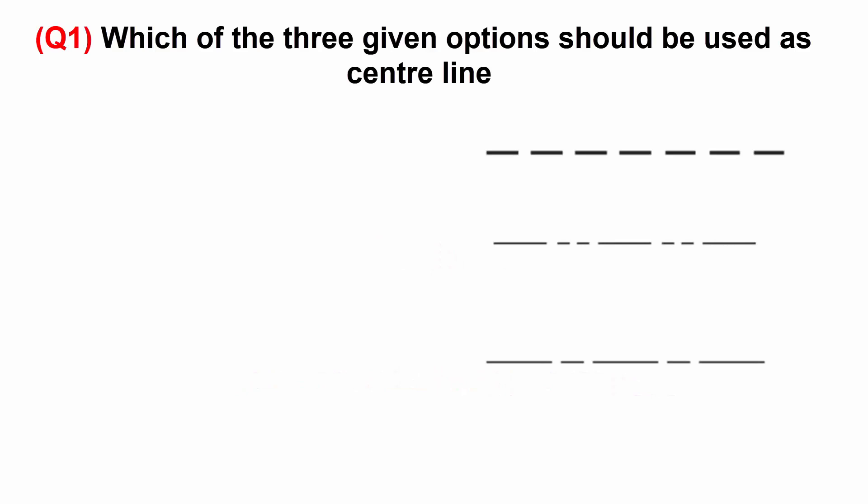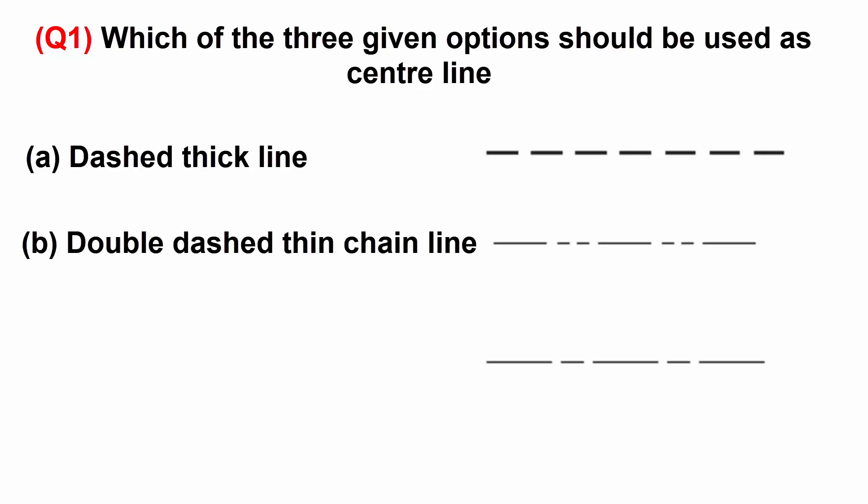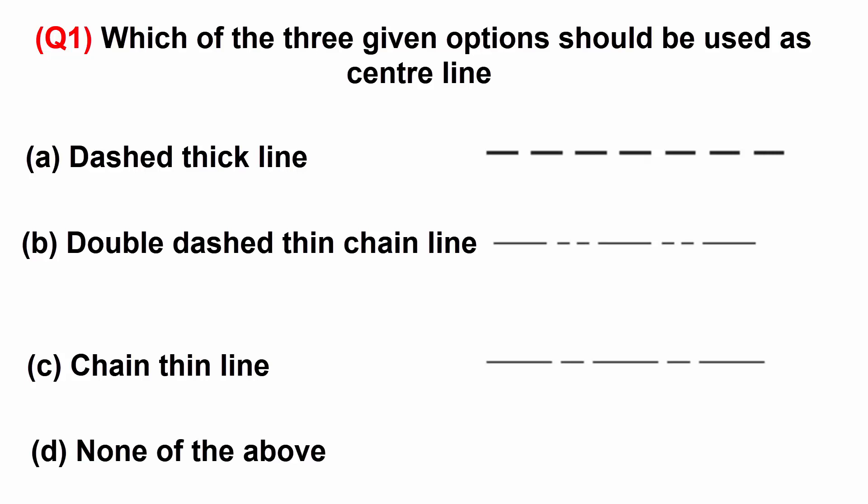Which of the three given options should be used as a center line? A: dashed thick line. B: double dashed thin chain line. C: chain thin line. Or D: none of the above.